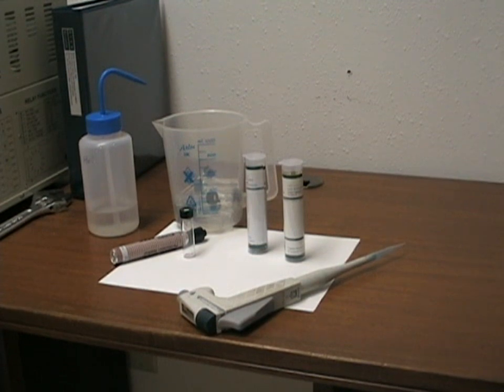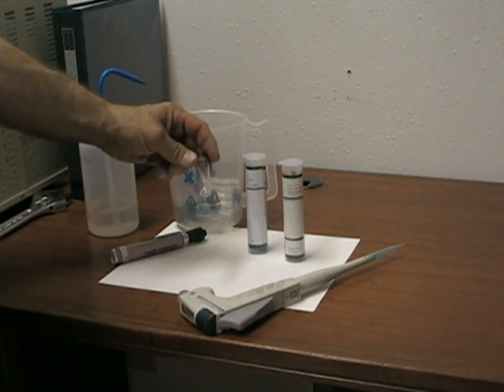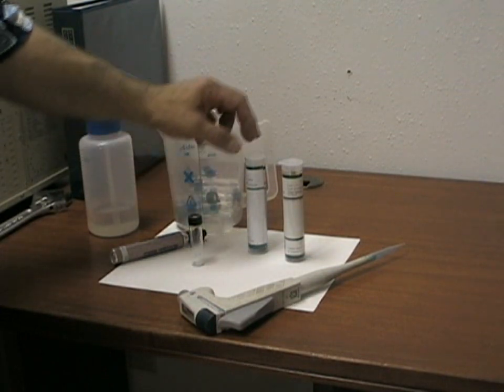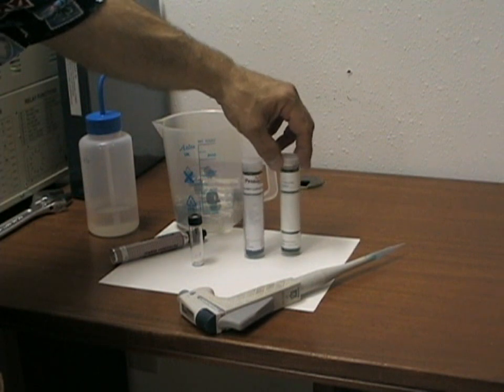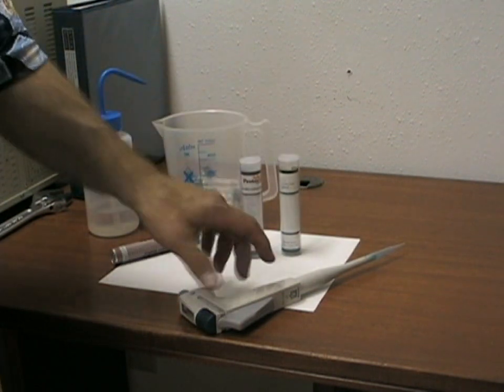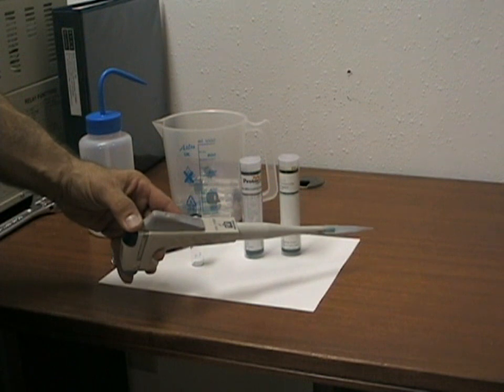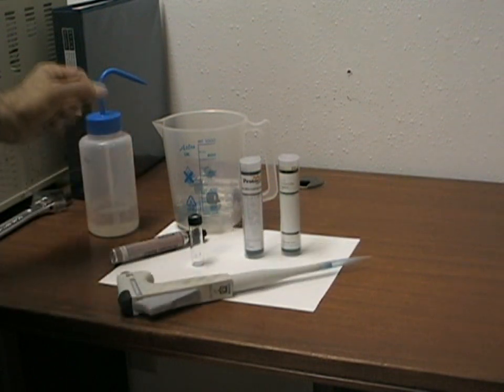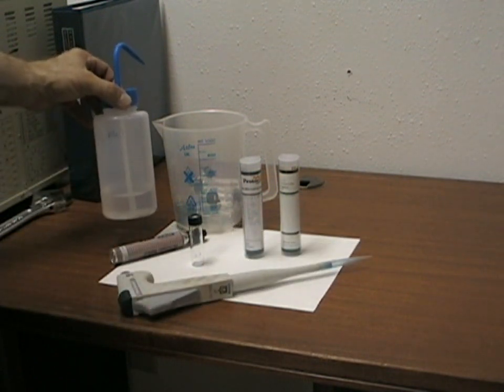This is the procedure for preparing a 100 part per million working standard to calibrate the GC instrument. 100 parts per million is the equivalent of 0.1 grams per liter. You will need glass storage vials to hold the diluted standard, the concentrated calibration material, a digital pipette to measure small volumes of the standard, and deionized water to make the dilution.